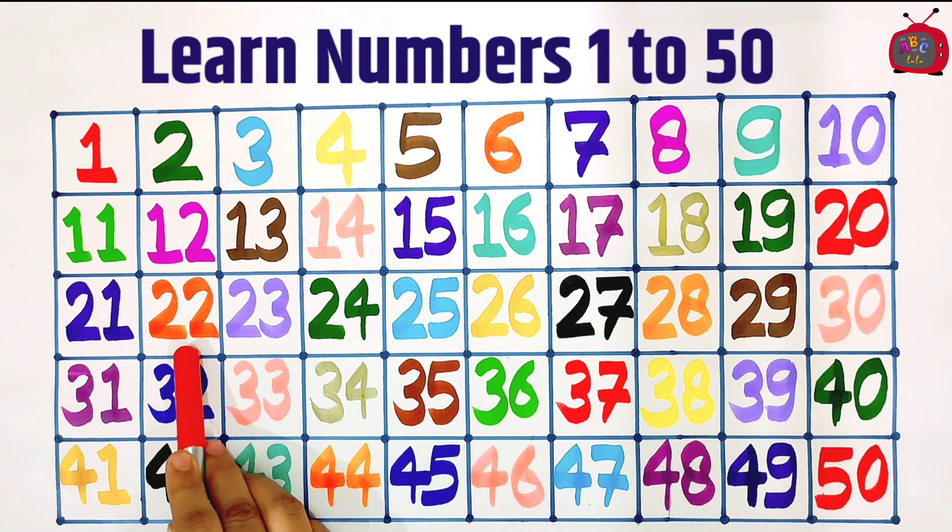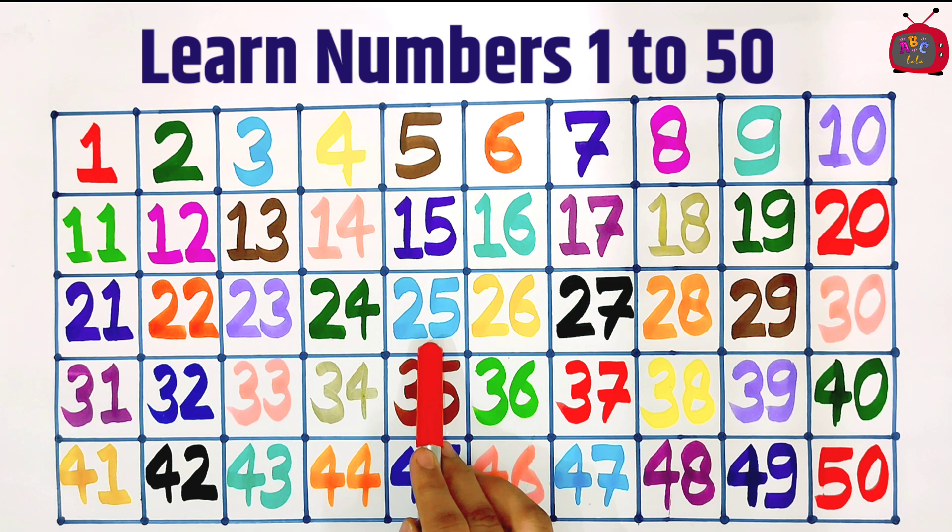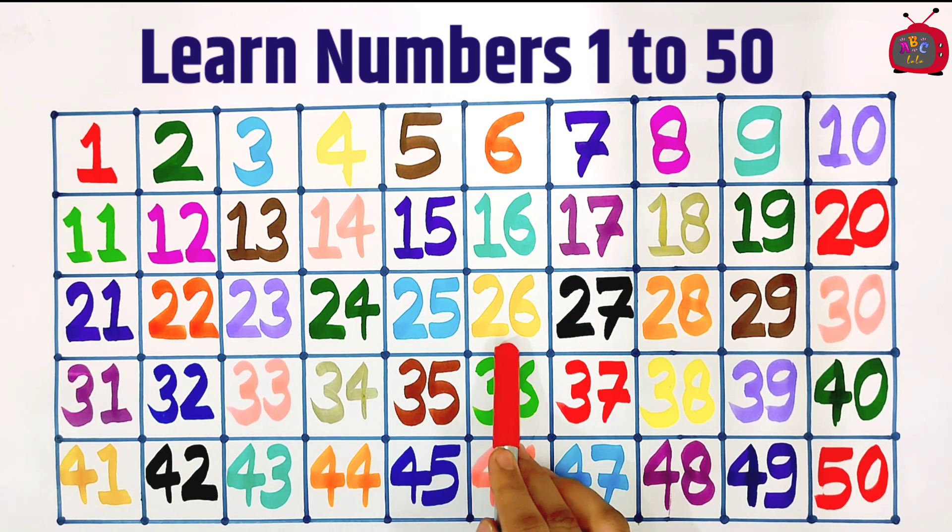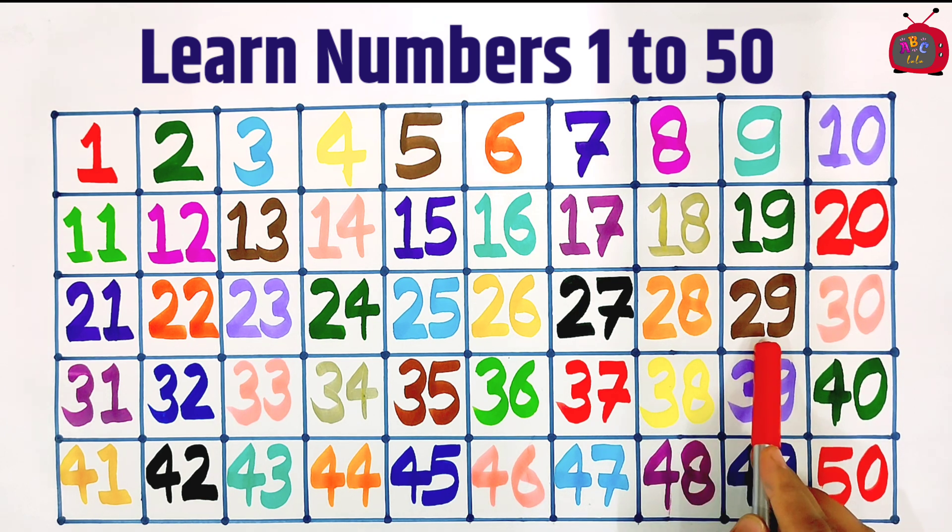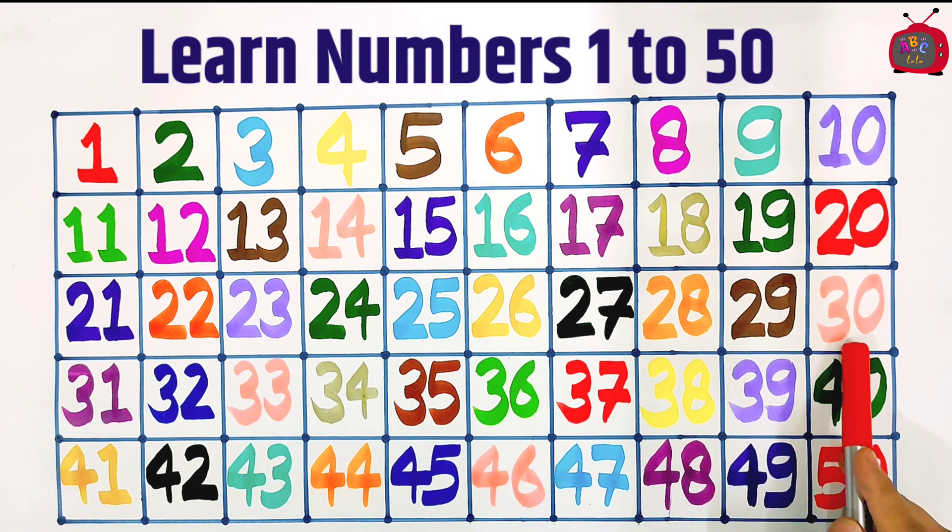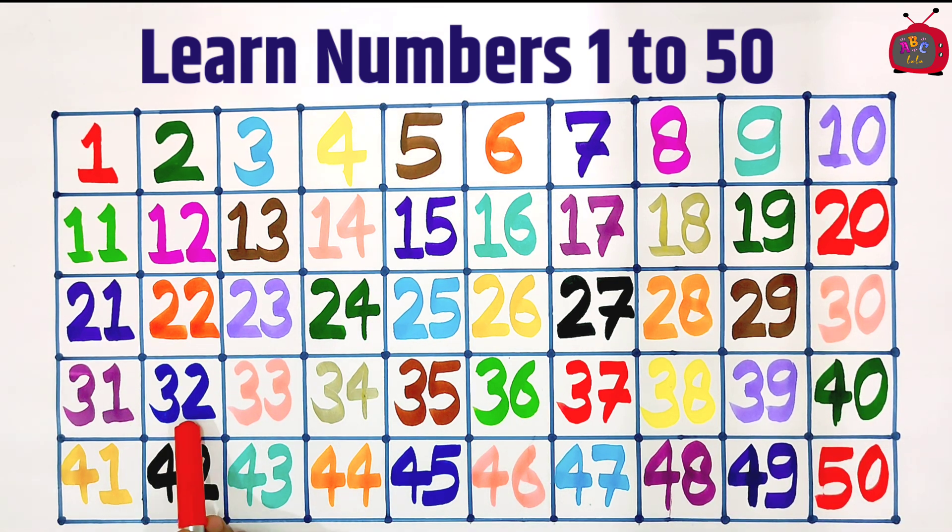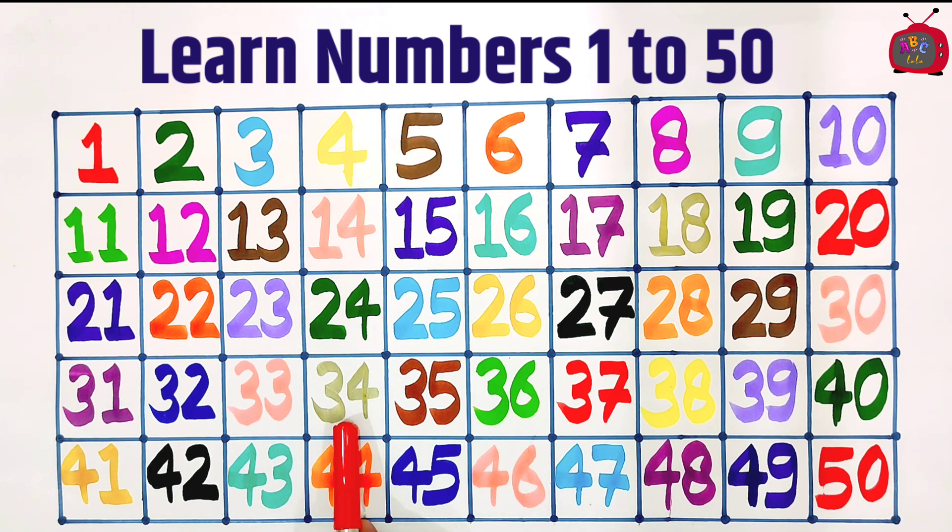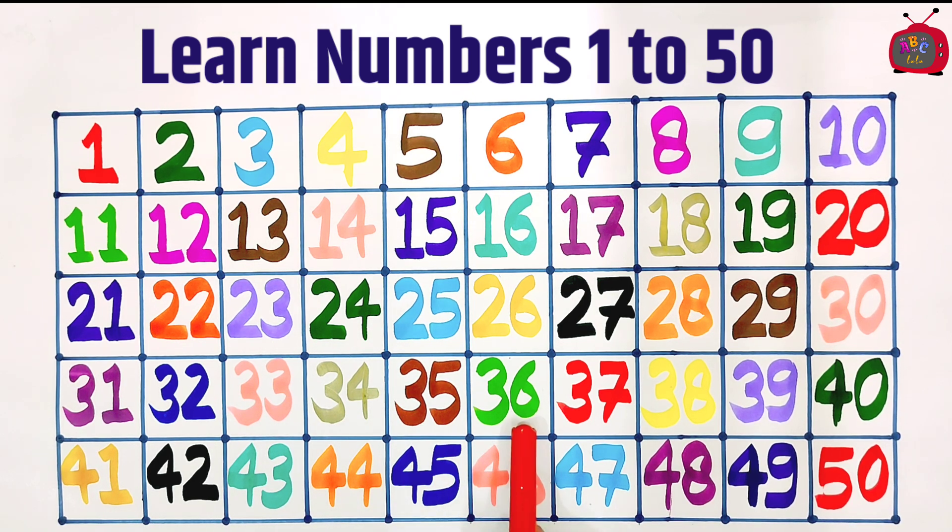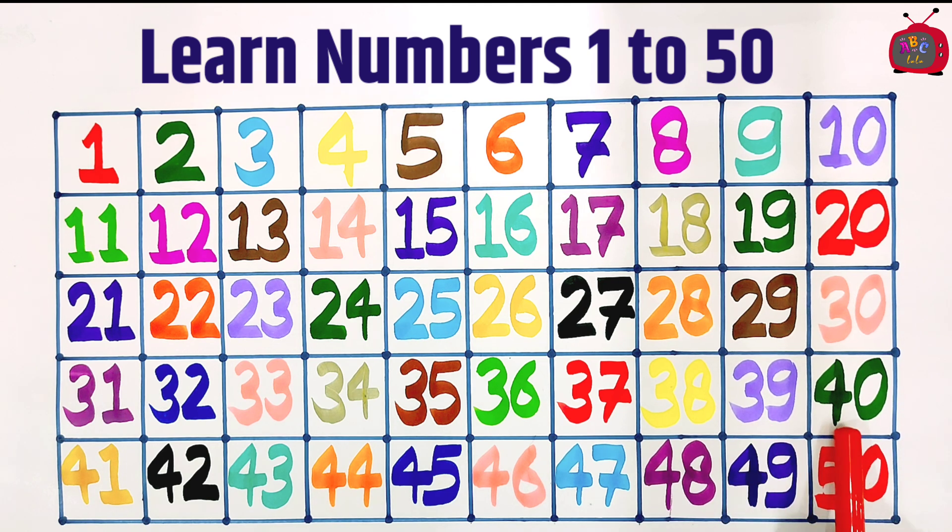Twenty-one, twenty-two, twenty-three, twenty-four, twenty-five, twenty-six, twenty-seven, twenty-eight, twenty-nine, thirty, thirty-one, thirty-two, thirty-three, thirty-four, thirty-five, thirty-six, thirty-seven, thirty-eight, thirty-nine, forty.